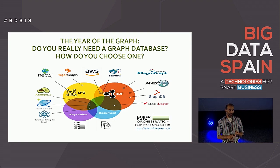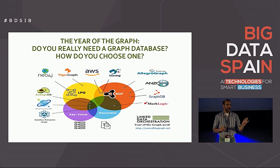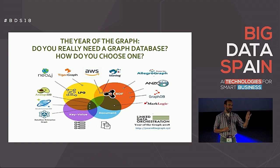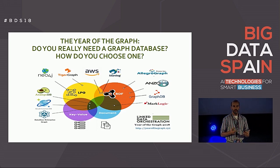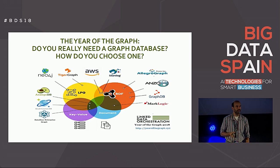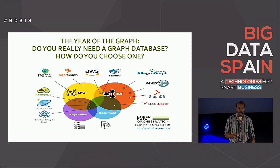First: do you really need a graph database? And if you do, how do you actually choose one? Can you raise your hands if you are more interested in the first question — if you are here to learn about graph databases? Good percentage. And how many of you are already familiar and want help in choosing one? A smaller percentage — makes sense.